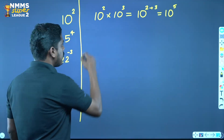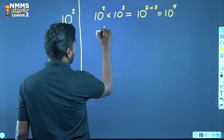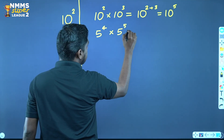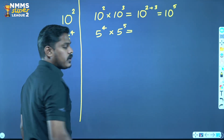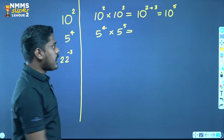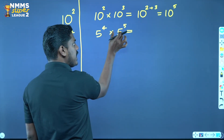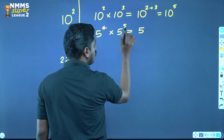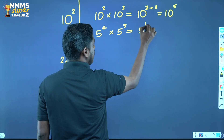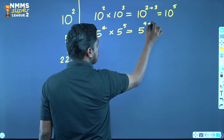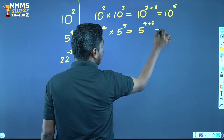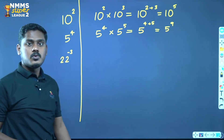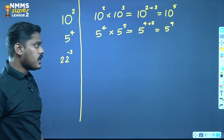For example, 5 raised to 4 into 5 raised to 5. The exponents are 4 and 5. 4 plus 5 is equal to 9, so the answer is 5 raised to 9.